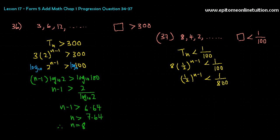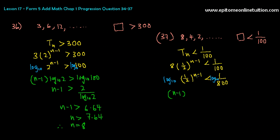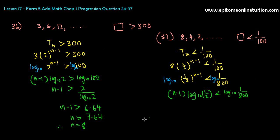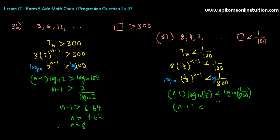800 — you cannot make it into base 2. So you add a log 10 to both sides, because you need to bring the n down. After adding log 10, there will be n minus 1 times log 10 of (1/2) is less than log 10 of (1/800). If you're not sure of your logarithm, please go back and view the videos on logarithm. You can press in your calculator: log 10 of (1/800) divided by log 10 of (1/2). Remember to use brackets when pressing your calculator.